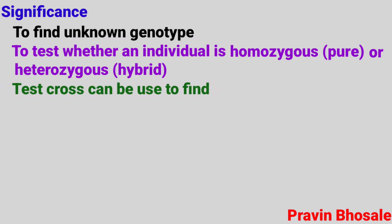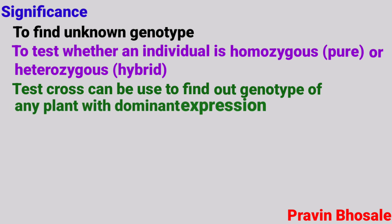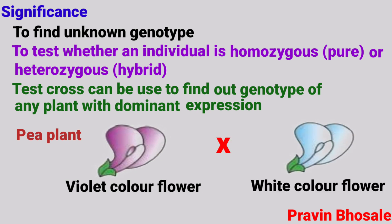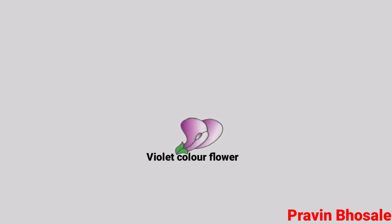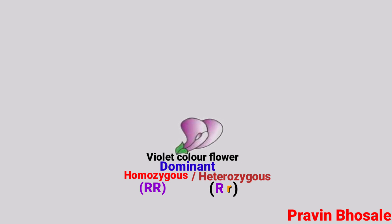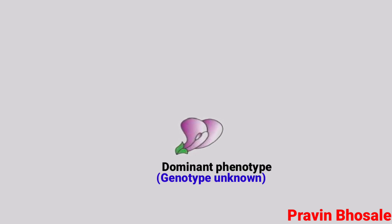Test cross can be used to find out the genotype of any plant with dominant expression. For example, a pea plant having violet purple color flower is crossed with a pea plant with white color flower. Here, violet color — that is purple color — is dominant. We don't know whether it is homozygous, containing capital R capital R, or heterozygous, containing capital R small r. It is violet in color, but we don't know the genotype. It is unknown.